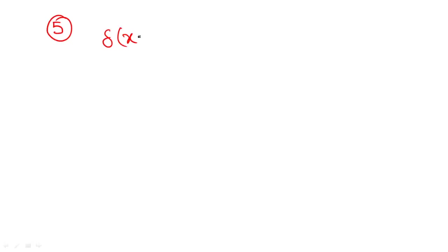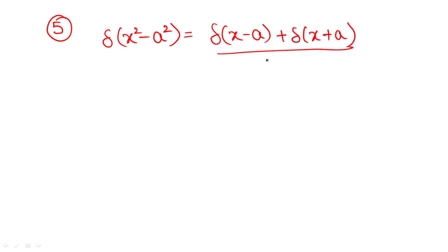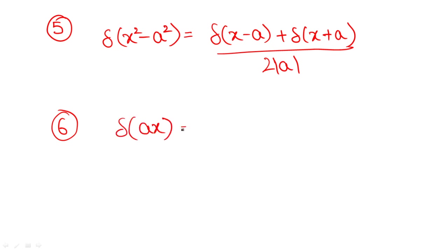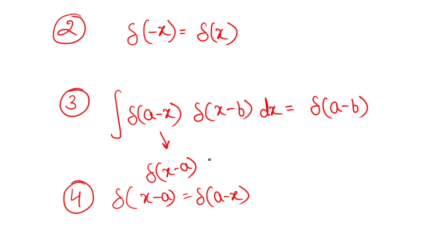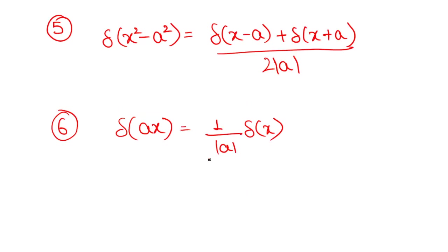The fifth property: delta(x squared minus a squared) equals delta(x minus a) plus delta(x plus a), all divided by 2 times the absolute value of a. This is another very important property — if you know it, it's easy, but if you don't, expression-based questions become difficult. The sixth property: delta(ax) equals 1 over the absolute value of a, times delta(x). These are the key properties of the Dirac delta function, and most exam questions are based on them.